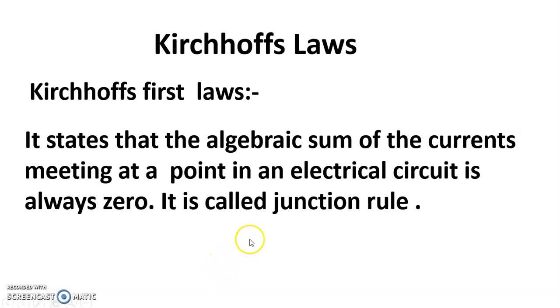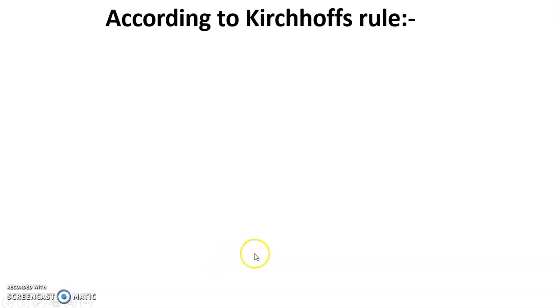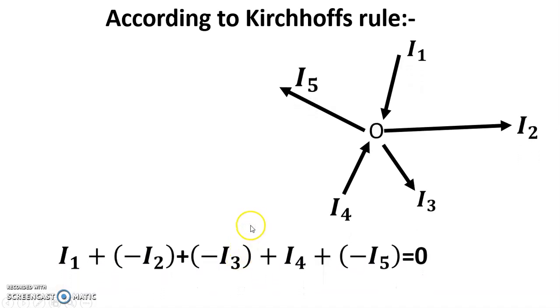Explanation: Consider, according to Kirchhoff's rule, a point O in an electrical circuit at which currents I1, I2, I4, I5 are flowing through five conductors in the direction. Let us adopt the following sign convention: the current flowing in a conductor towards the junction of conductors is taken as positive and the current flowing away from the junction is taken as negative.